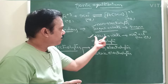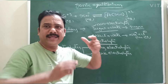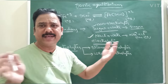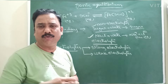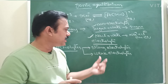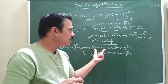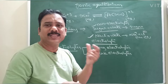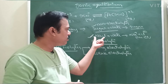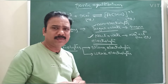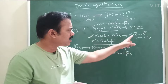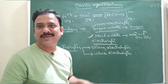If a substance completely ionizes in water — that is, complete ionization occurs and complete ions are formed — that is called a strong electrolyte. For example, 100 NaCl molecules give 100 Na⁺ and 100 Cl⁻ ions in water.